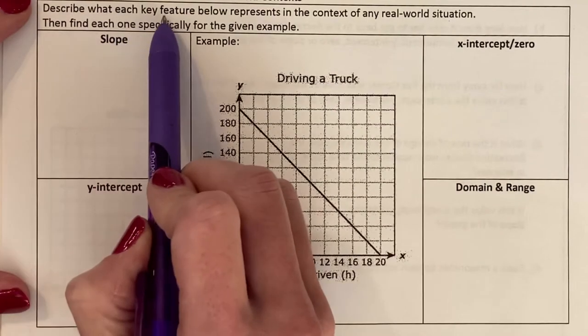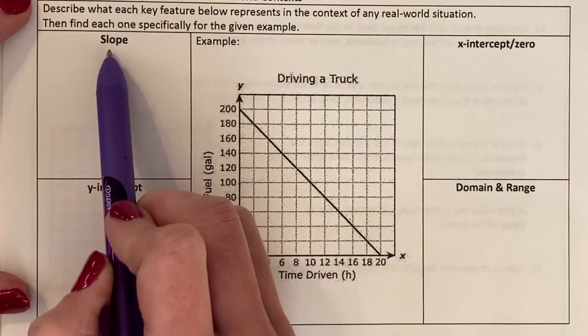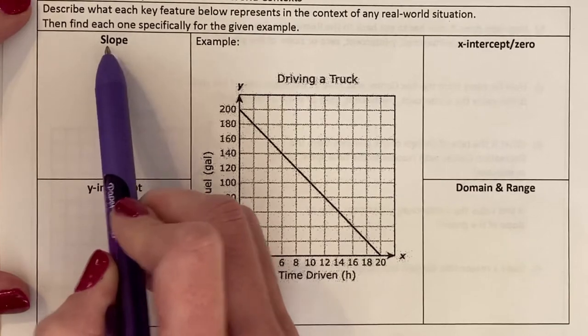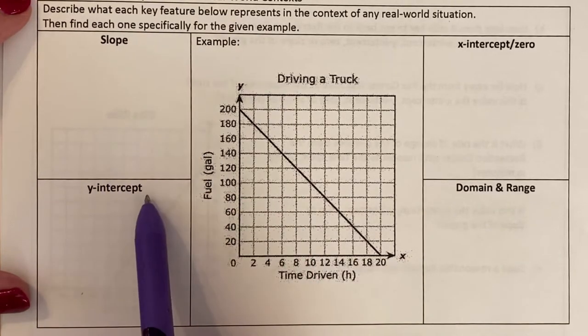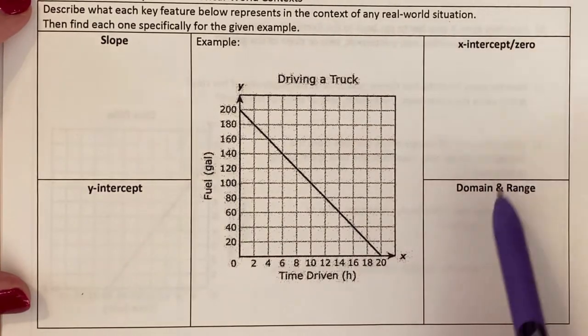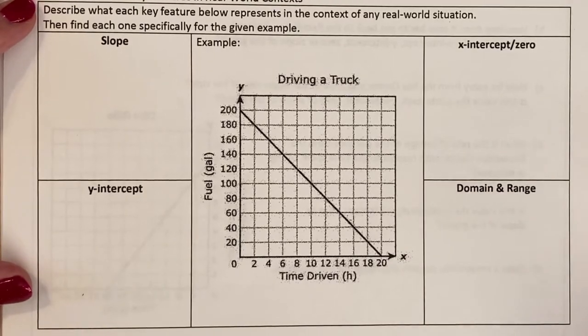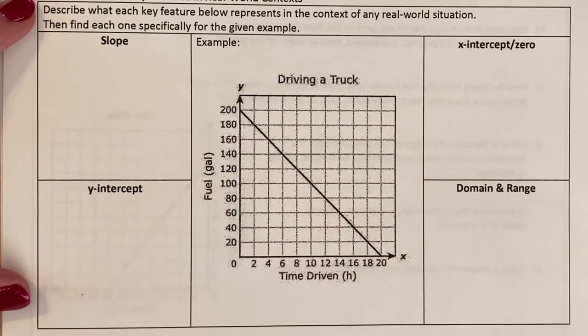We need to describe what each key feature below represents. So we need to take a look at what the slope means—not only what is the slope, but what does it mean. What is the y-intercept and what does it mean? What is the x-intercept and what does it mean? And we're going to talk about domain and range really briefly as a preview.